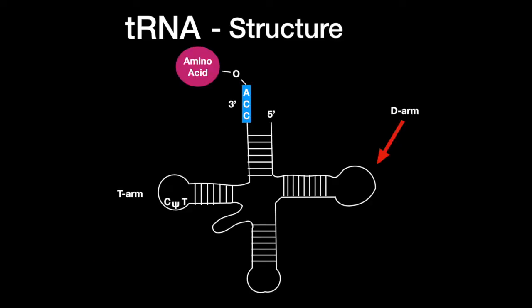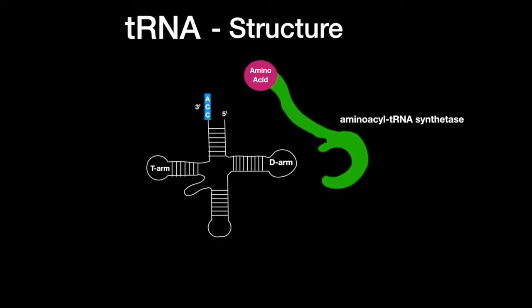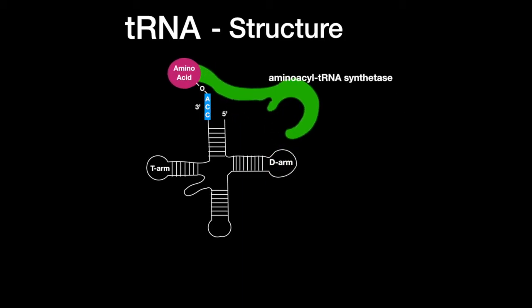Opposite to the T arm is the D arm. It contains dihydroyuridine residues that is the region where aminoacyl tRNA synthetase can recognize and attach the correct amino acid, rendering the tRNA charged.